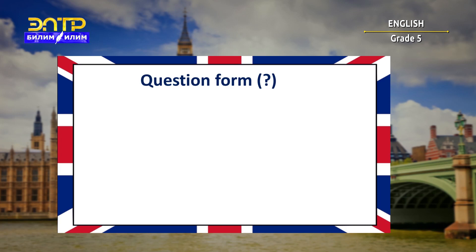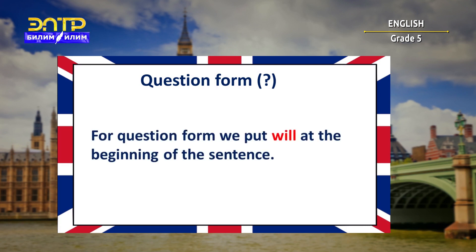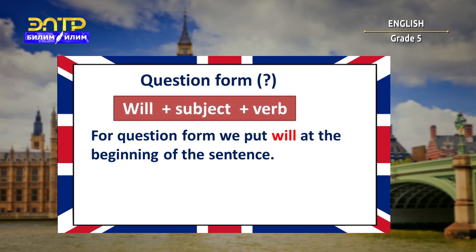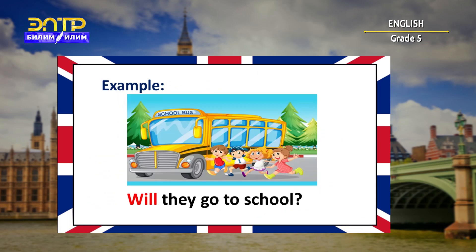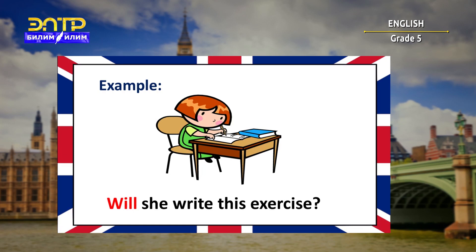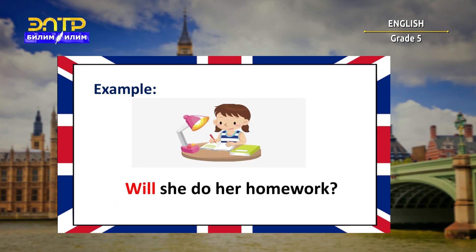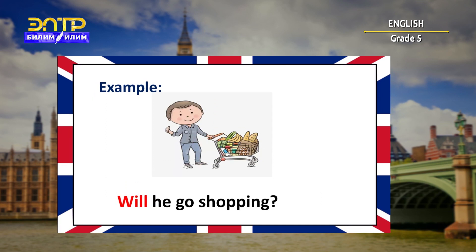Now let's speak about questions in future simple tense. For question form, we put will at the beginning of the sentence. So it is will plus subject plus verb. For example: Will you go swimming? Will they go to school? Will she write this exercise? Will she do her homework? Will he go shopping?